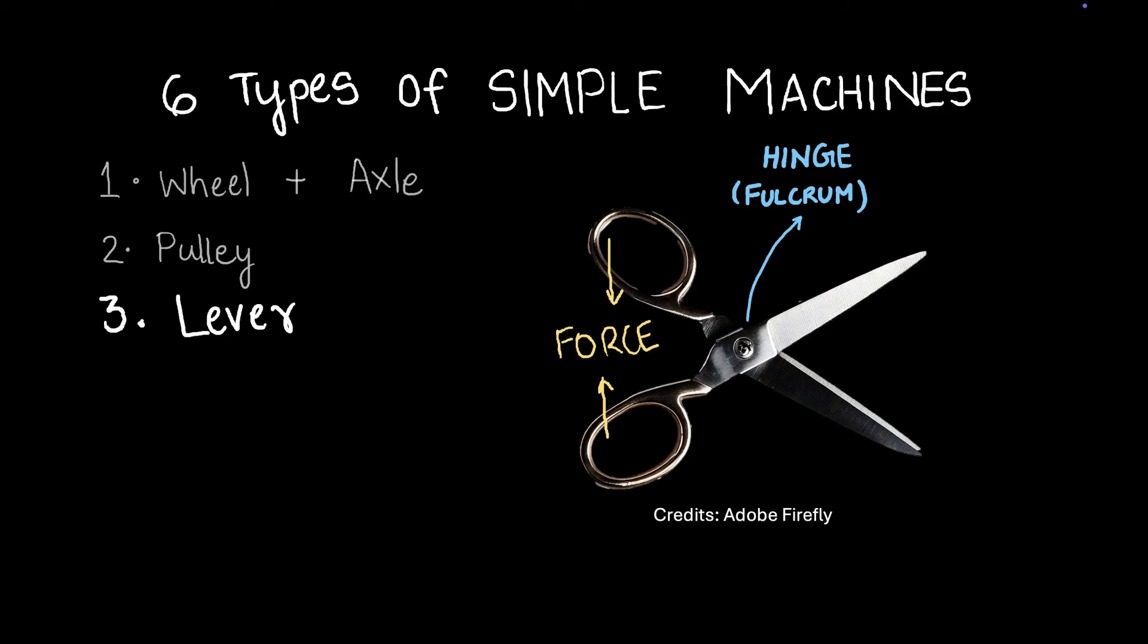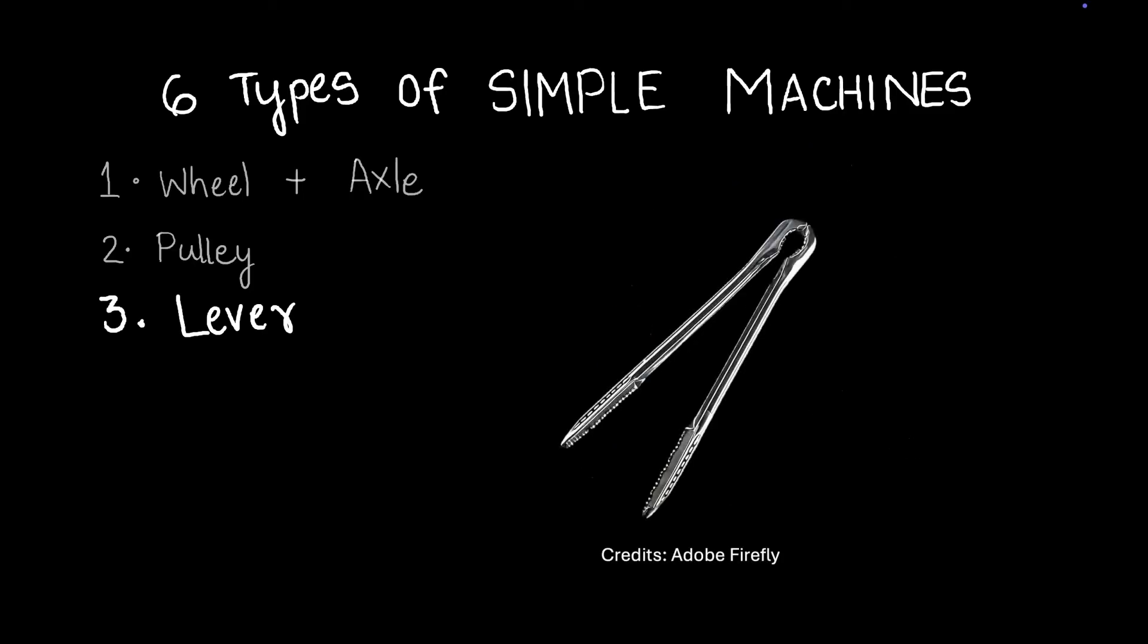Let's take another example - tongs. This is also another simple lever, a simple machine which is a lever. Let's say you have a particular object here that you were trying to grab with your tongs, and you are applying force somewhere here and you are applying some force up there as well. And which point do you think doesn't move when you do all of this?